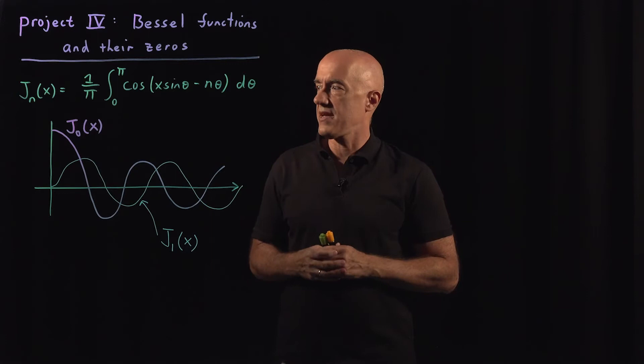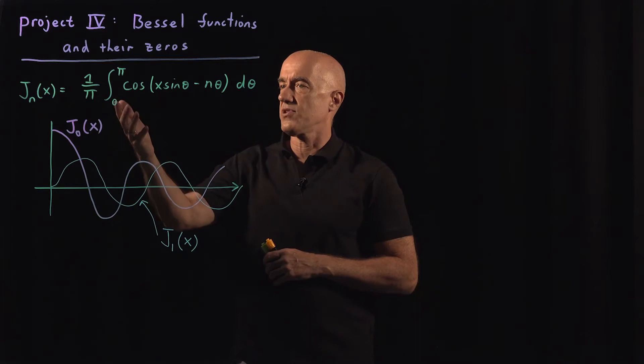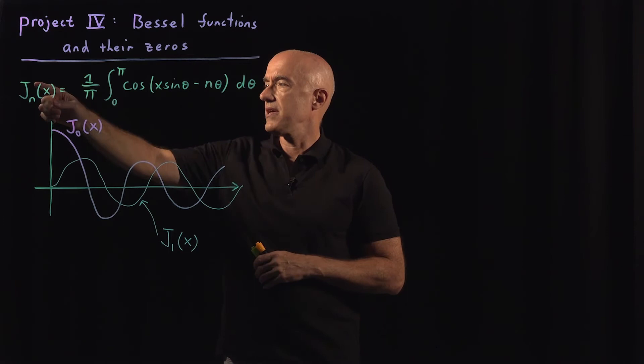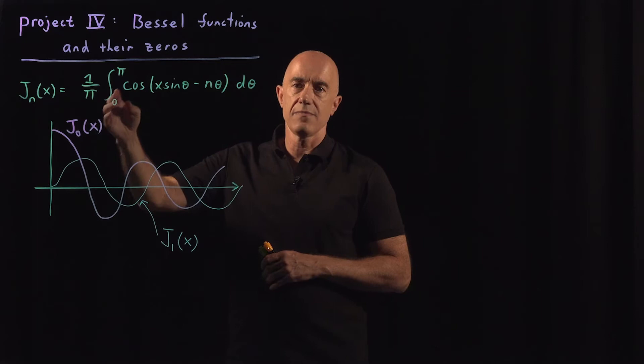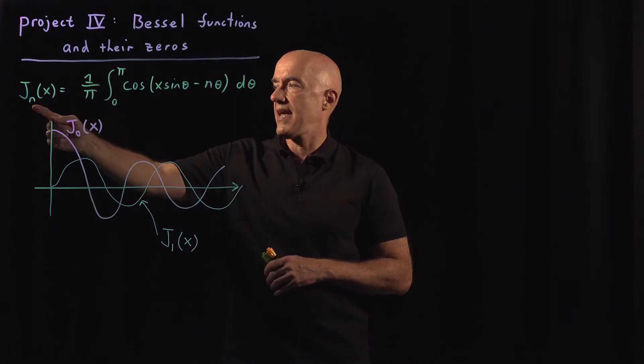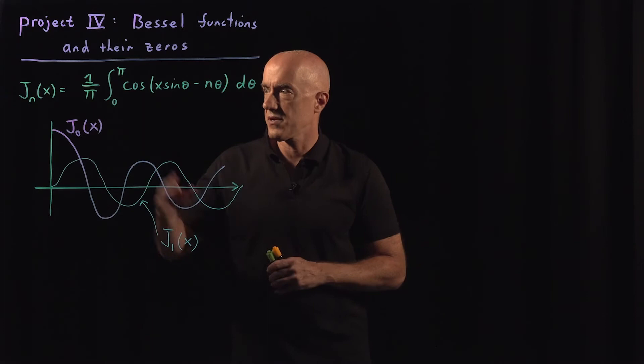The Bessel function can be defined in terms of an integral. The nth Bessel function, where n will be 0, 1, 2, 3, etc., is defined as J_n(x) = (1/π) times the integral from 0 to π of the cosine of (x times sine θ minus n·θ), integrated over dθ. This n is the same index as in J_n.